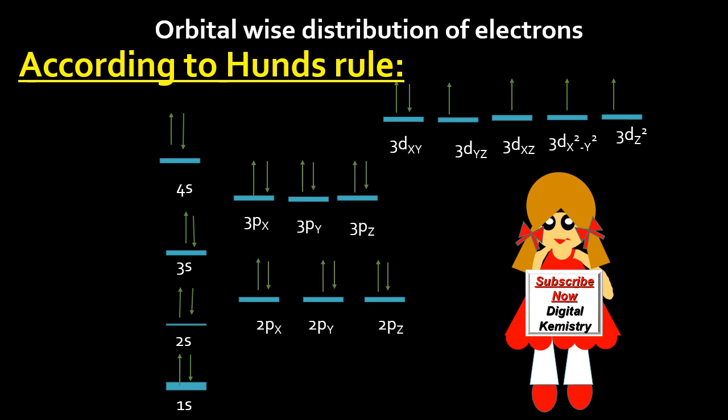Then the 3s orbital also having 2 electrons with opposite spin. Then 3p orbitals having 6 electrons. First fill it singly, then doubling up.